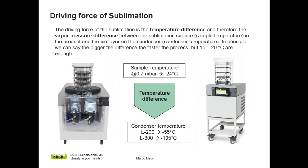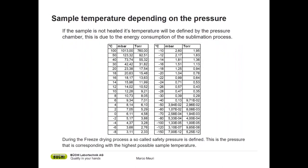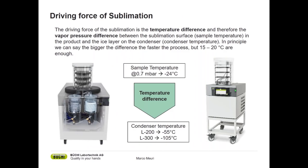A very common misunderstanding in freeze drying — going back to this table — is that the lower the pressure, the faster the freeze drying process will be. This is not correct, because the lower we set the pressure, the lower the sample temperature will be, down to minus 50 or minus 60 degrees. This would reduce the temperature difference, making the process much slower. That's why we choose typical pressures between one millibar down to about 0.1 millibar, depending on the melting point of the sample.